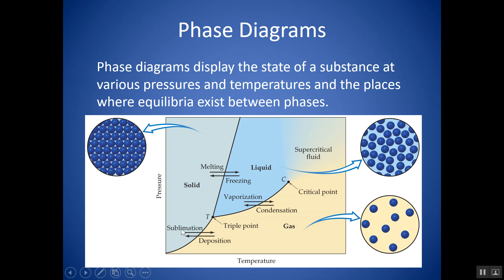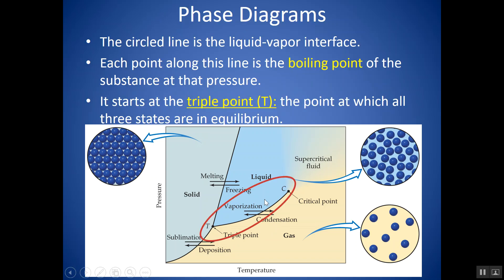If I gave you any pressure and temperature values, you can find the point on the diagram and figure out what phase you're in given that pressure and temperature. Here I have liquid on one side and gas on the other. So this line represents all the boiling points. Given any pressure, you go across, drop down, and find the boiling point for that substance.